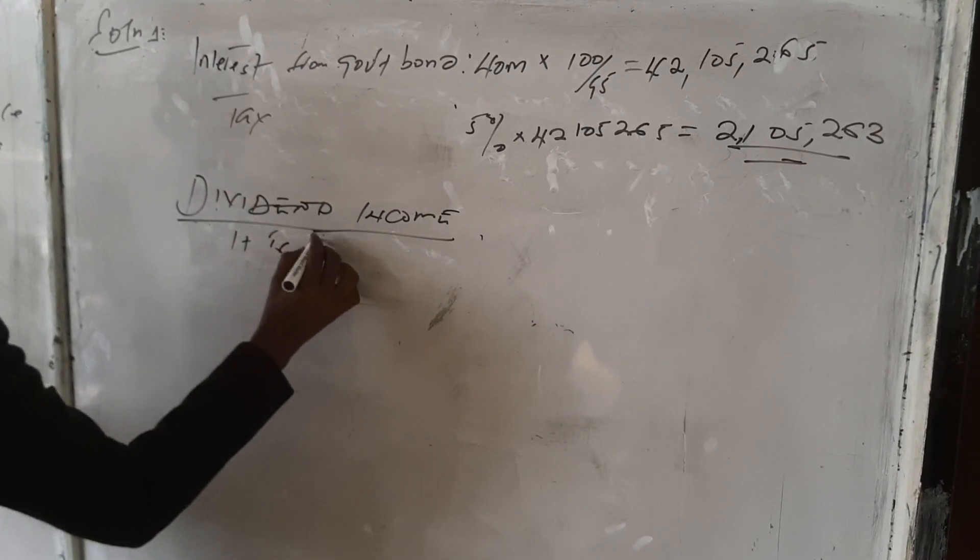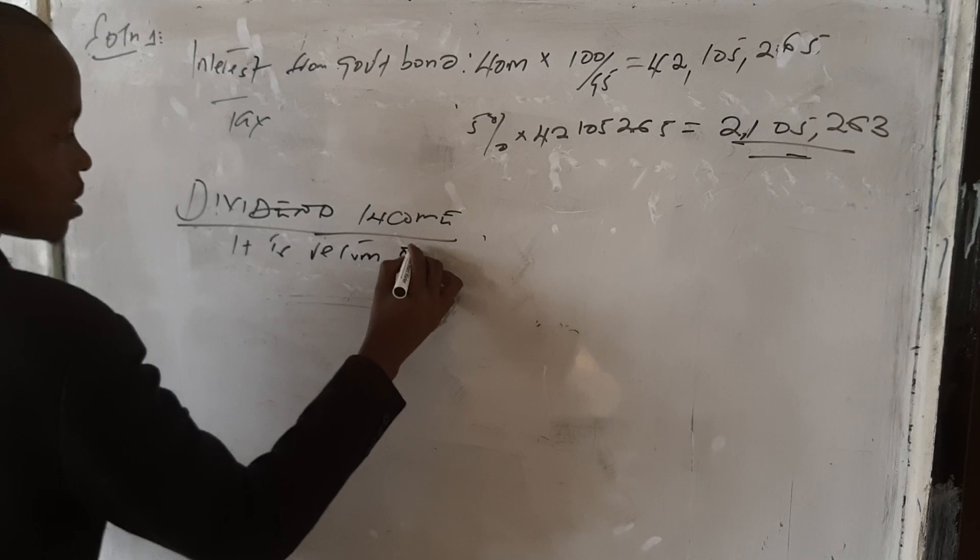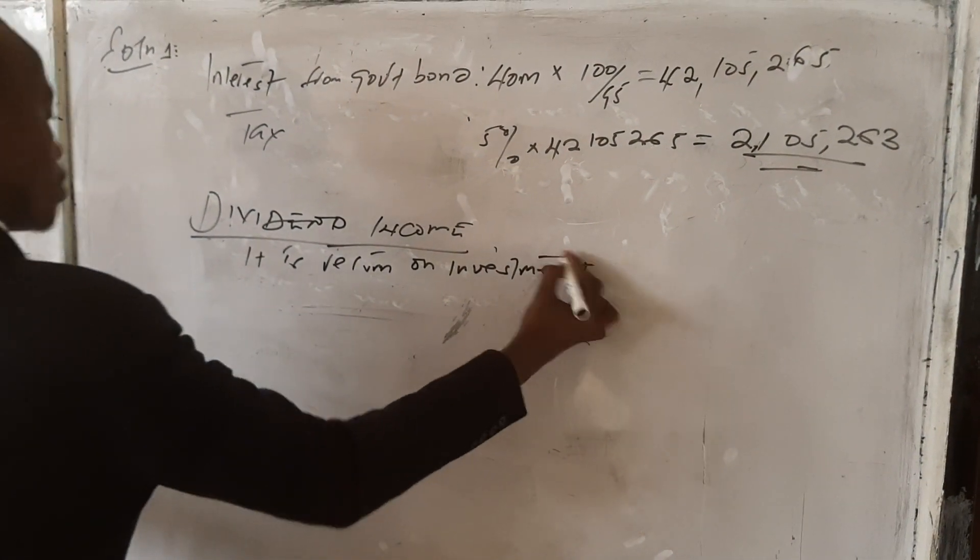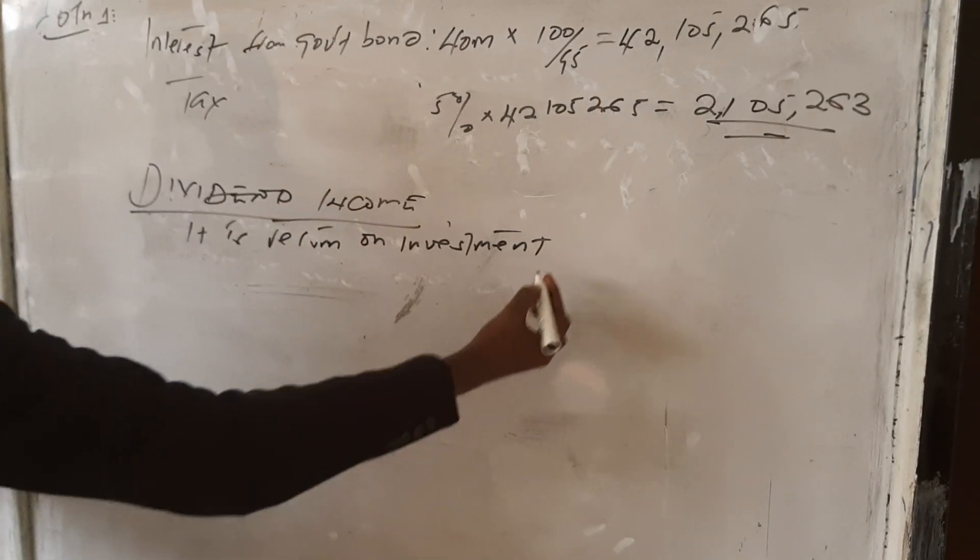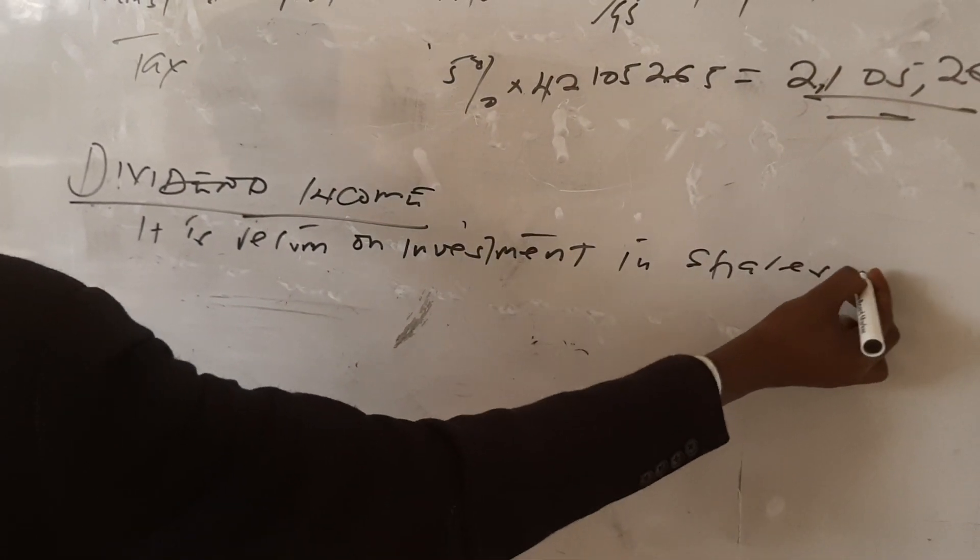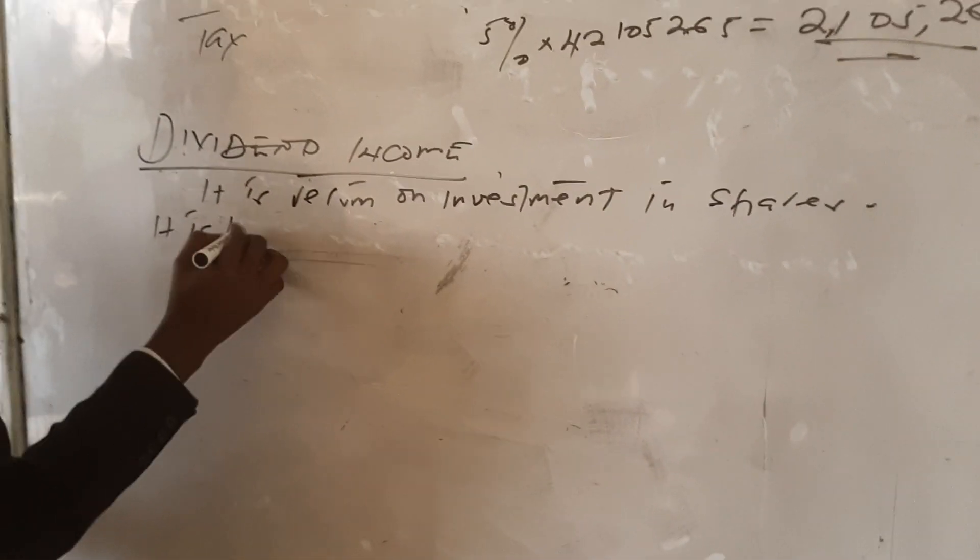Dividend income is just a return on investment in shares. Therefore, it is taxed at 15% as withholding tax.